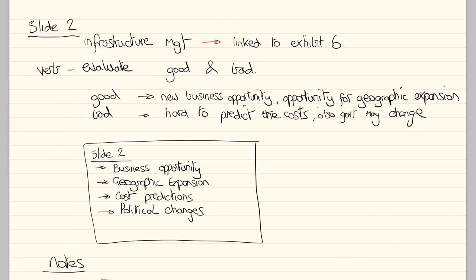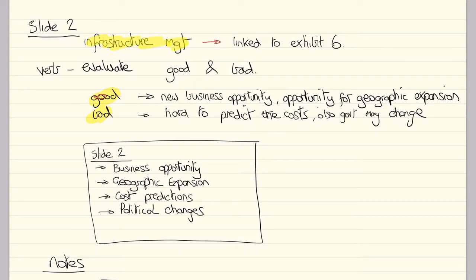Let's have a look at slide two. On slide two we were asked to evaluate. When we see the word evaluate, we should be straight away thinking: what does evaluate mean? To me, evaluate means what is good and what is bad. So we're evaluating the opportunity to undertake long-term infrastructure management. What is meant by long-term infrastructure management — had you been looking at exhibit six, you would know exactly what is meant by this. Poor answers would not have included reference to what was mentioned in exhibit six.